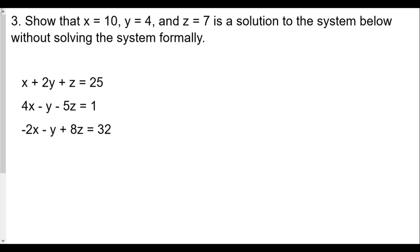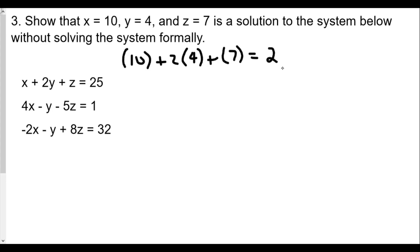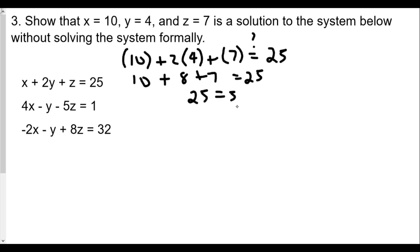Let's look at the first equation: x plus 2y plus z equals 25. Replace x with 10, plus 2 times y which is 4, plus z which is 7 — will that equal 25? We get 10 plus 8 plus 7, which does equal 25. So 25 equals 25 — that's checked.